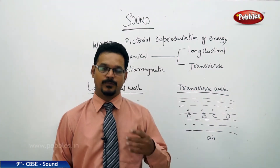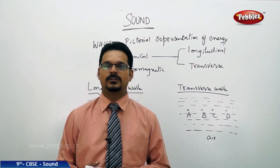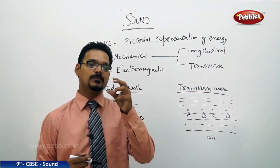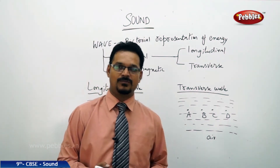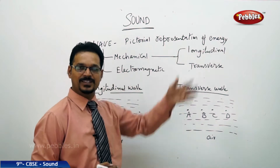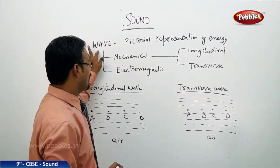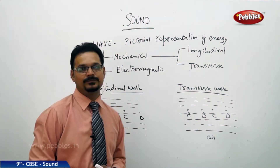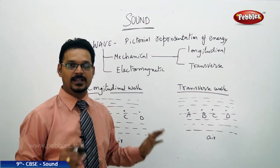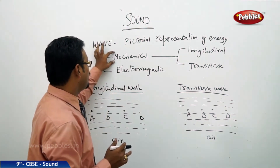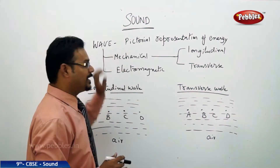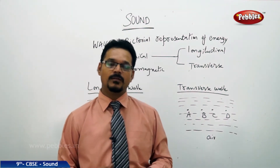Before discussing the properties and characteristics of sound, since sound is a wave, let us first discuss some fundamentals of waves. A wave is a pictorial representation of energy. Waves are classified into many types: mechanical waves, electromagnetic waves, matter waves, and more. Our subject here is limited to mechanical and electromagnetic waves, and we are not touching electromagnetic because it is not relevant to sound.